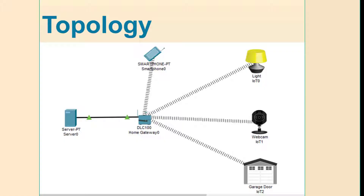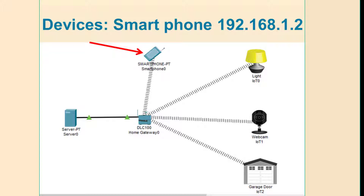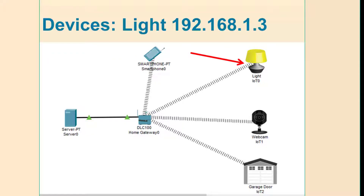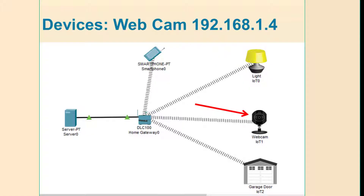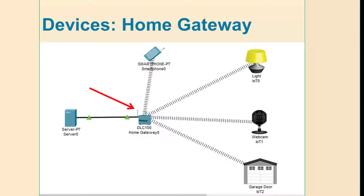This is the topology we will be using. The first device is the server, and we will assign the IP address 192.168.1.1. The second component is the smartphone with IP address 192.168.1.2. Then we have the light and the webcam, each with their given IP addresses, and the garage door with its particular IP address. The last component is the home gateway, to which we don't assign any IP address. It is used for wireless connectivity with the various devices and wired connectivity towards the server end.